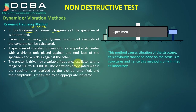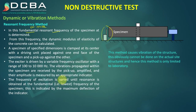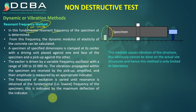The exciter is driven by a variable frequency oscillator with a range of 100 to 10,000 Hz. Vibrations propagated within the specimen are received by the pickup, amplified, and the amplitude is measured by an appropriate indicator. The frequency of excitation is varied until resonance is obtained at the fundamental — the lowest frequency of the specimen, which is the first mode — indicated by the maximum deflection of the indicator.